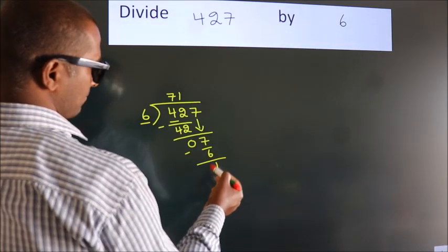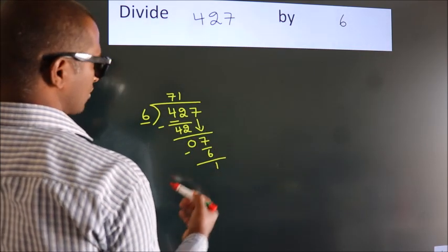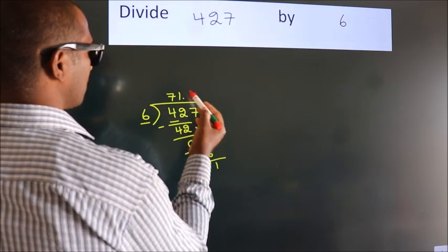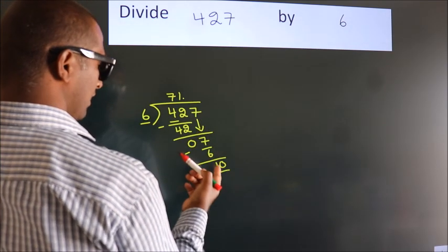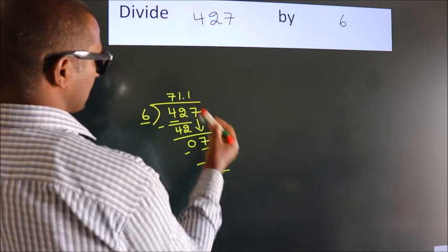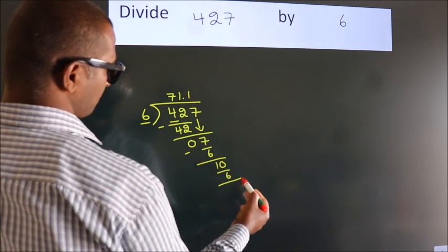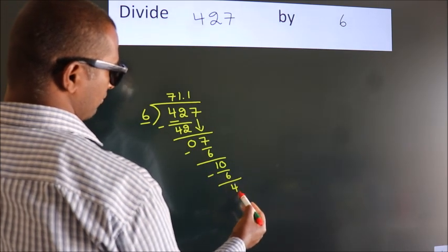After this, no more numbers to bring it down. So what we do is we put dot, take 0. So 10. A number close to 10 in 6 table is 6 times 1 is 6. Now we subtract. We get 4.